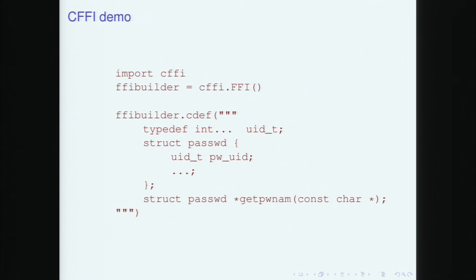For example, 'typedef int uid_t ...' — it probably works by writing a big C expression like: sizeof(uid_t) == 1 ? use this : sizeof == 2 ? use that, etc., and then an extra round of magic to know if it's signed or unsigned. For signed versus unsigned, something like: you take minus one, cast it to uid_t, and ask whether it's positive now.